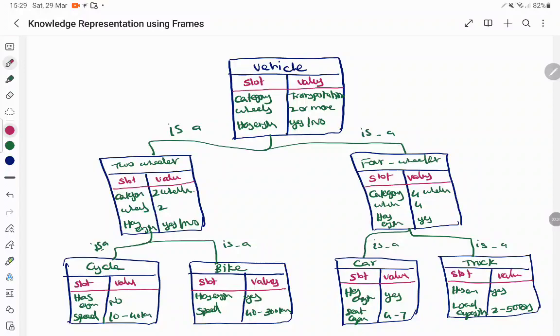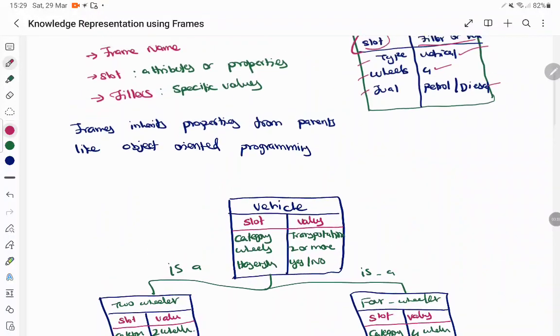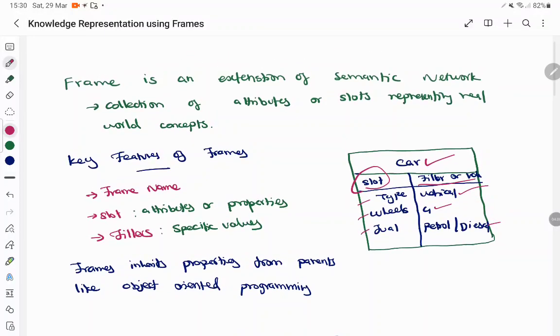When I want to find the inference for any frame, I'm going to look into its path from the parental node to the present frame and list out all the inferences from each frame. This is one important way of knowledge representation in terms of frames. Thank you.